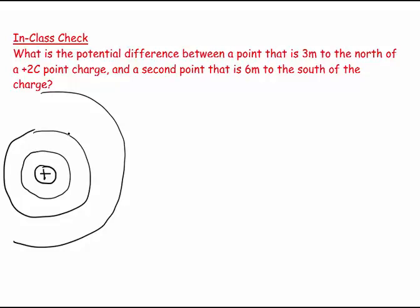To visualize, I have two points of interest. I have my first point, which is somewhere like this—we'll call that A—and that is 3 meters, and I'm going to say it's to the north. Then we have our point B, which is down here somewhere. This is 6 meters to the south.